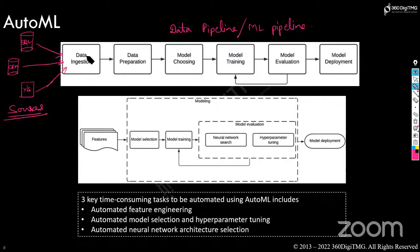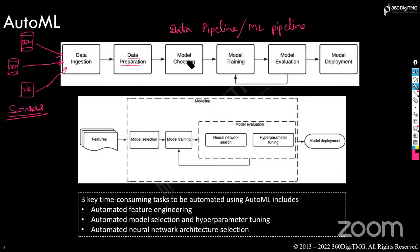Once you get the data from different sources, it's not always ready to use for building models. A lot of data cleansing, data preparation, and pre-processing is needed. After doing all of that, you take the prepared data and supply it to your model.